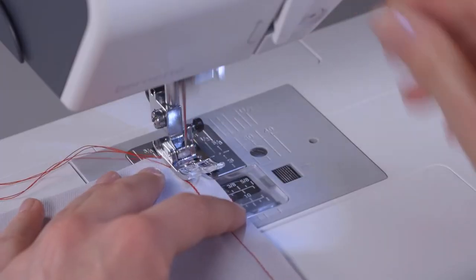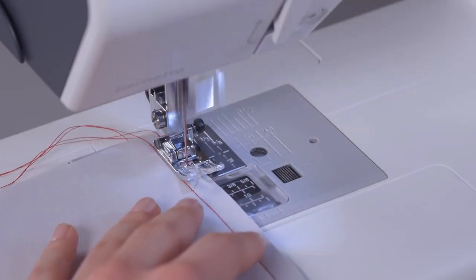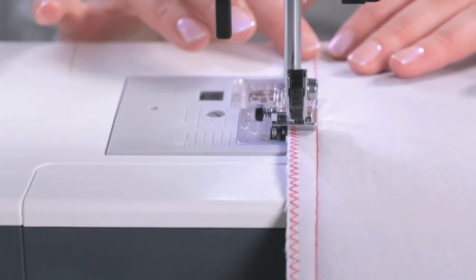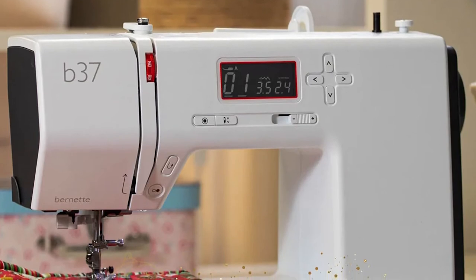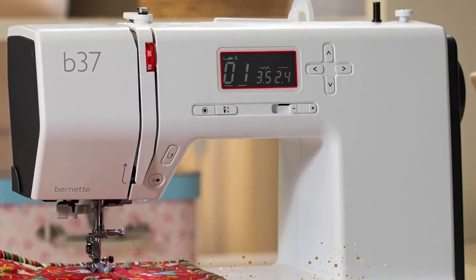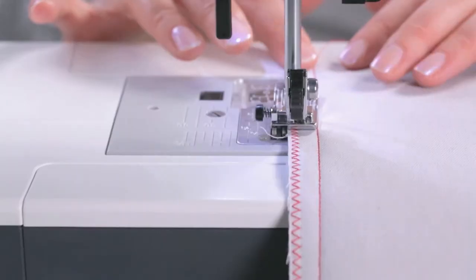To use the tool, first ensure that the presser foot is lifted. Then, pull the needle threader down and turn it away from you, so the hook comes out through the needle's eye. Draw the thread around the guide and under the hook. Turn the needle threader away from you and watch as it cleanly threads itself. It's that simple.